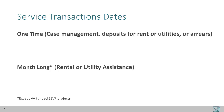There are two types of service transaction dates depending on the type of service. One-time, discrete services have the same start date and end date — this would be case management, deposits for rent or utilities, or arrears. Month-long service transactions use the start and end date of when the service is applied, such as rental or utility assistance for the whole month. One exception is VA-funded SSVF projects, which treat all services as one-time transactions to match the date checks are cut, for VA auditing and administrative purposes.